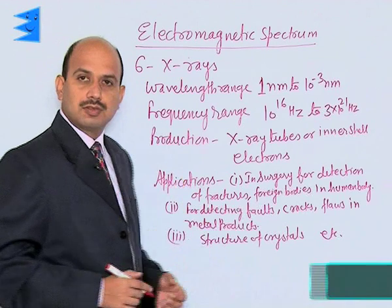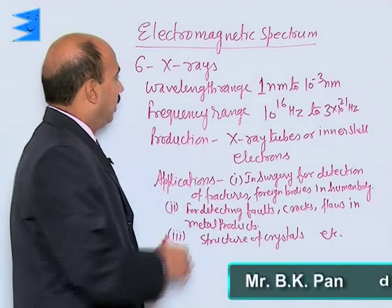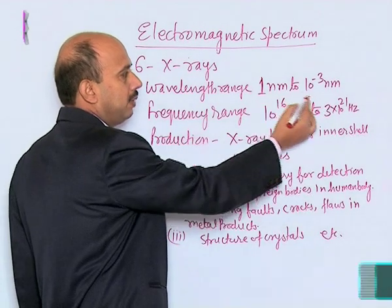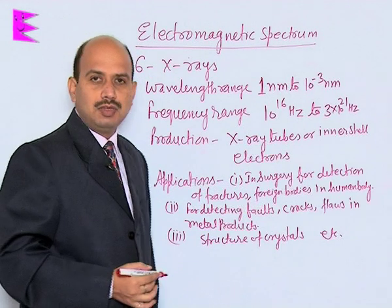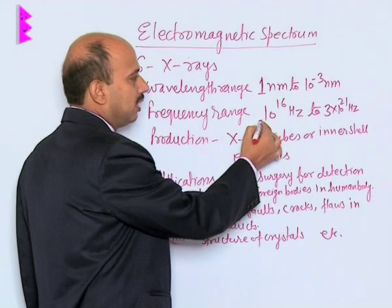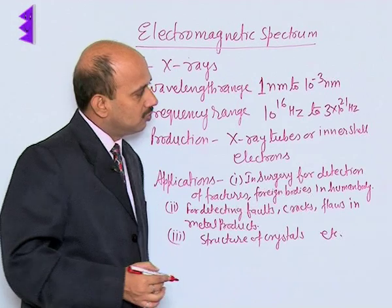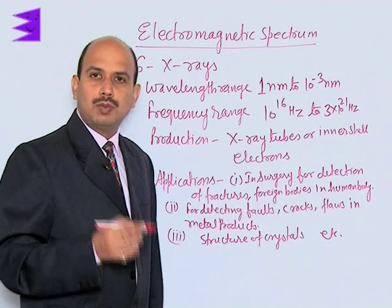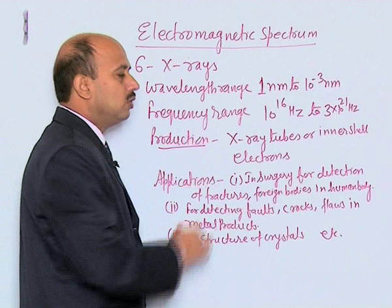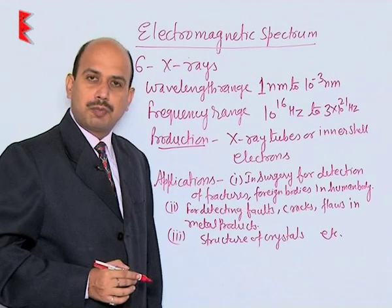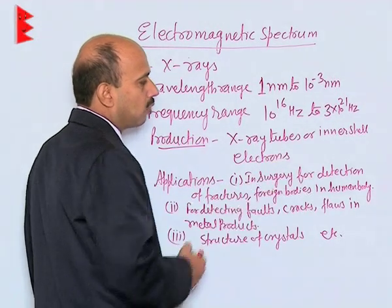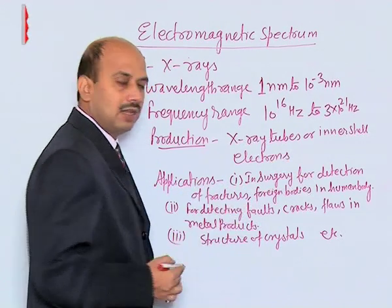See here, X-rays: the wavelength range for X-rays is 1 nanometer to 10 raise to power minus 3 nanometer, and frequency ranges from 10 raise to power 16 hertz to 3 into 10 raise to power 21 hertz. And production — how these X-rays are produced — these rays are produced by X-ray tubes or inner shell electrons.